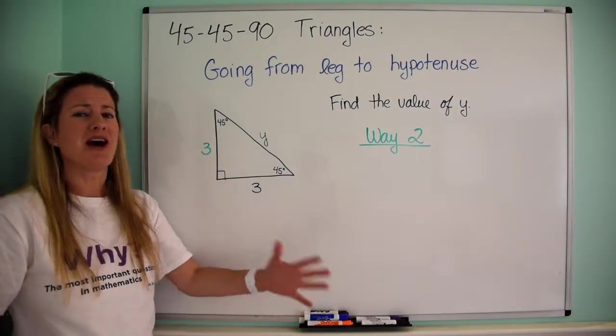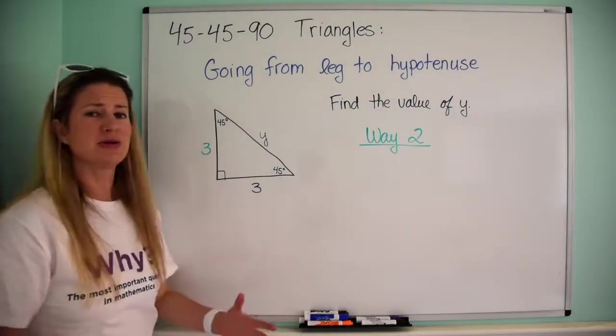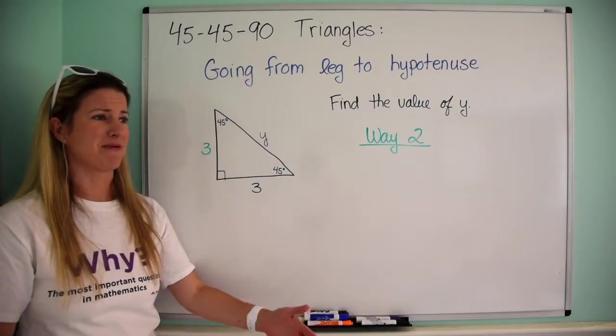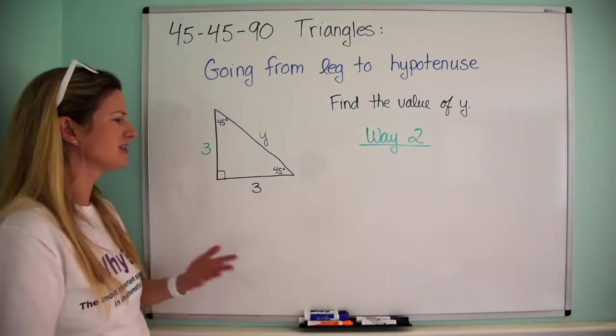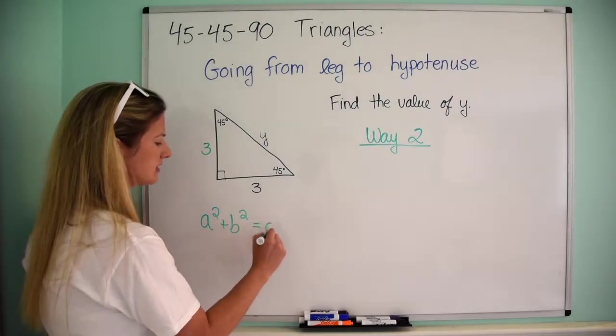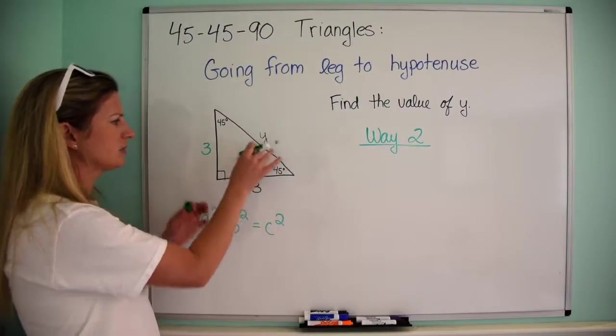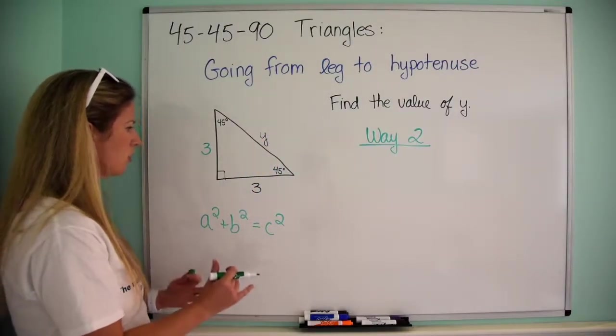This is totally awesome and the reason this is totally awesome is because I can use the Pythagorean theorem. I remember that Pythagorean theorem from middle school and that's just a squared plus b squared equals c squared, or the sum of the squares of the measures of the legs equals the square of the hypotenuse. This is super cool.